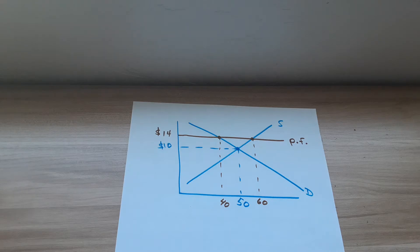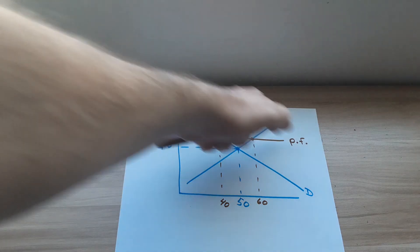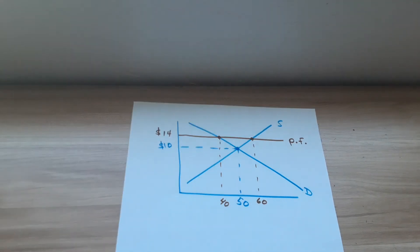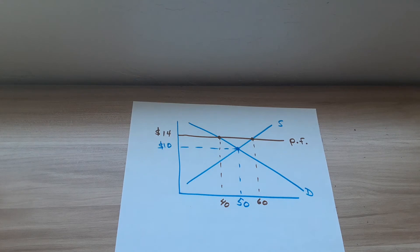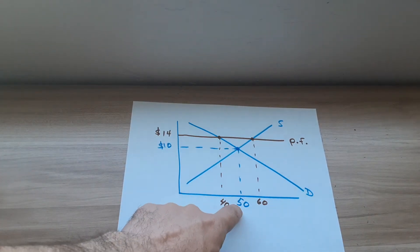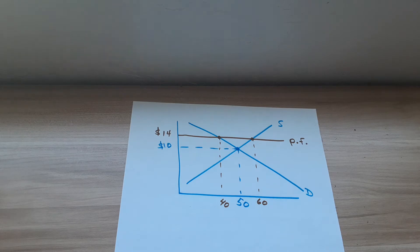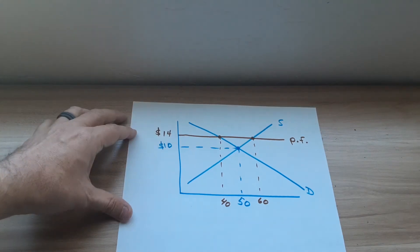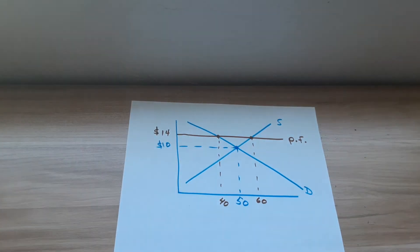Take a look at this graph. You have a price floor. Remember, price floors are set above the equilibrium — it's the lowest price allowed, so they can't get back down to the equilibrium price. Supply and demand determines a price of $10 with 50 units being bought and sold. The government comes in and raises the price to $14, saying you can't go below $14. That's why price floors are set above, so they can't get back to equilibrium.